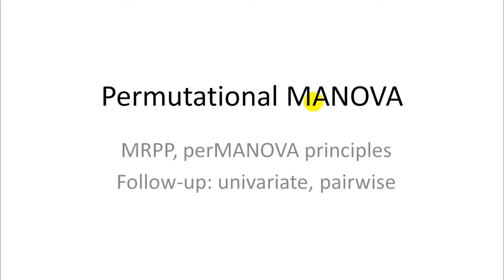Next, let's see how this permutational multivariate analysis of variance actually works. There's a very easy to understand version that I'll explain to you - the multiple response permutation procedure. The permutational multivariate analysis of variance works on the same principle, but it's more complicated because it allows for factorial designs and interactions.